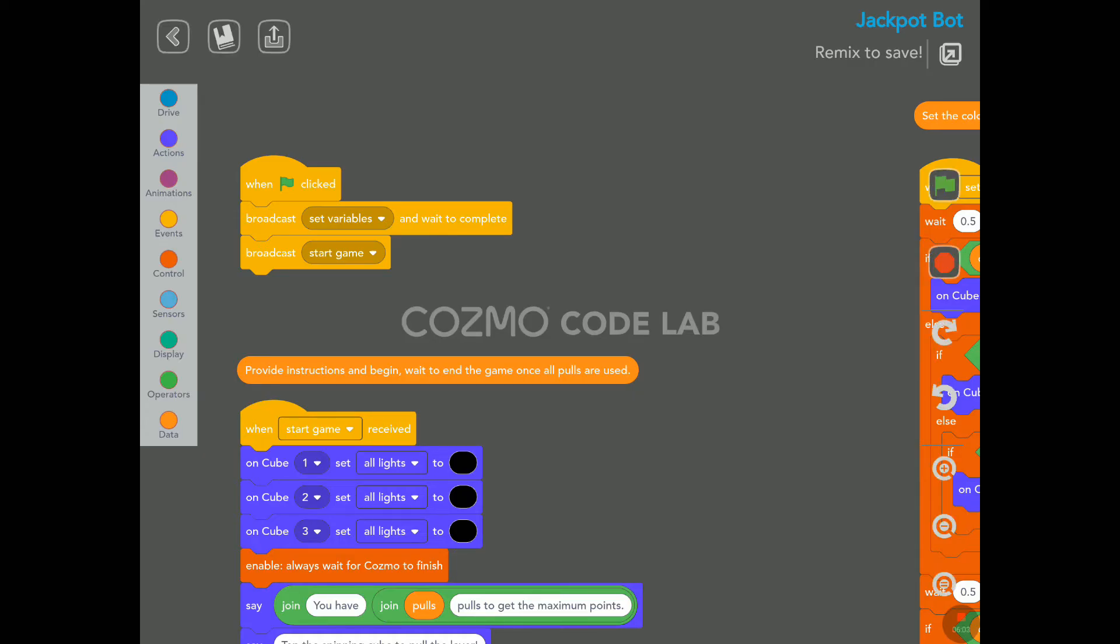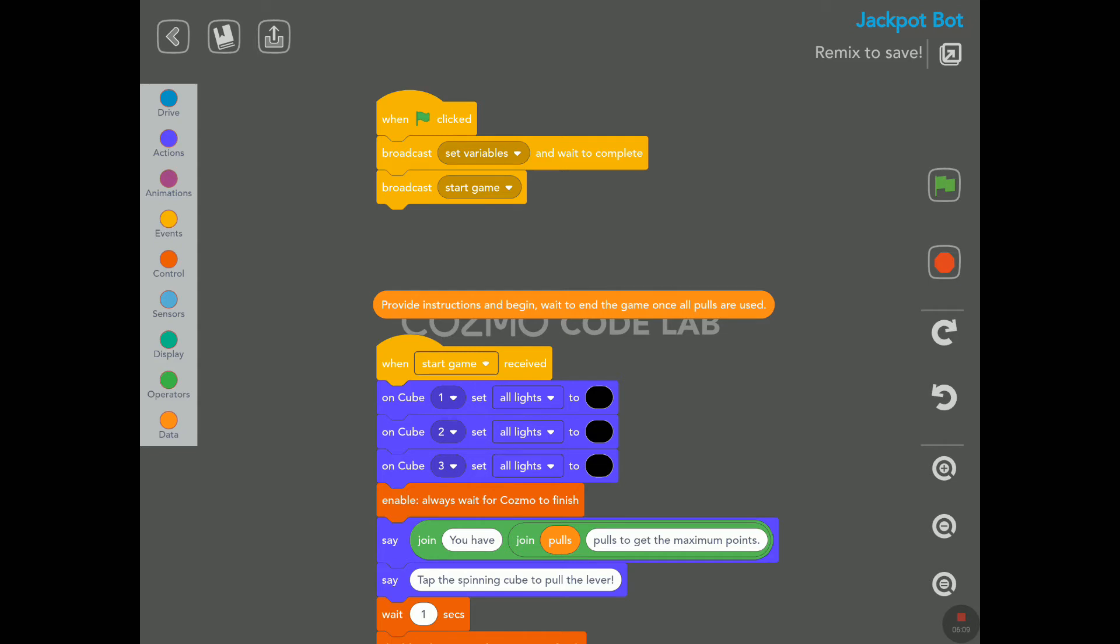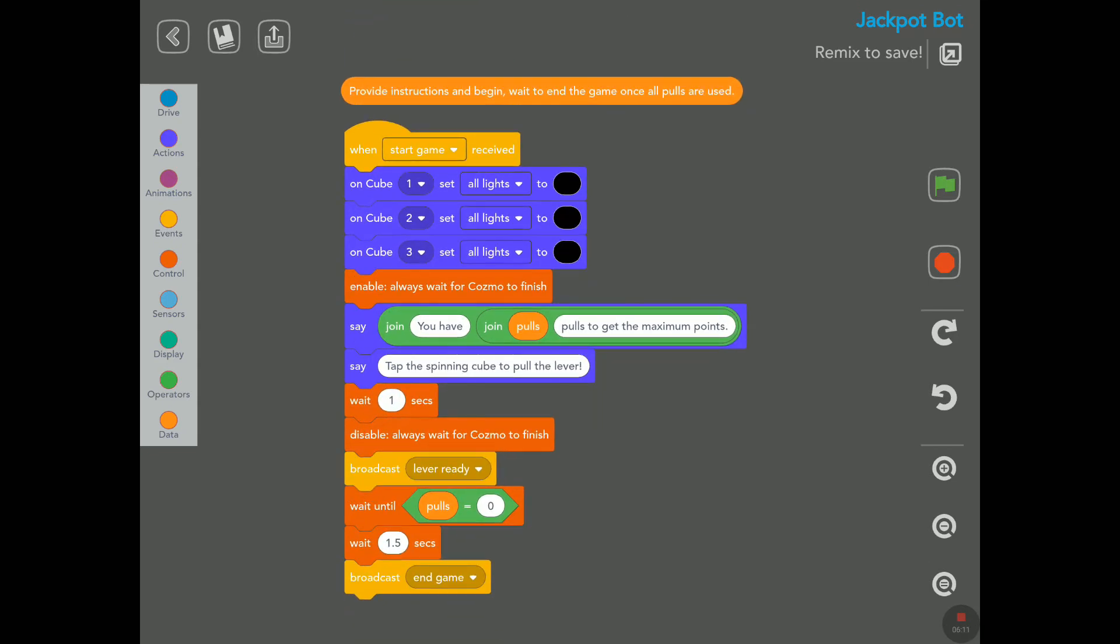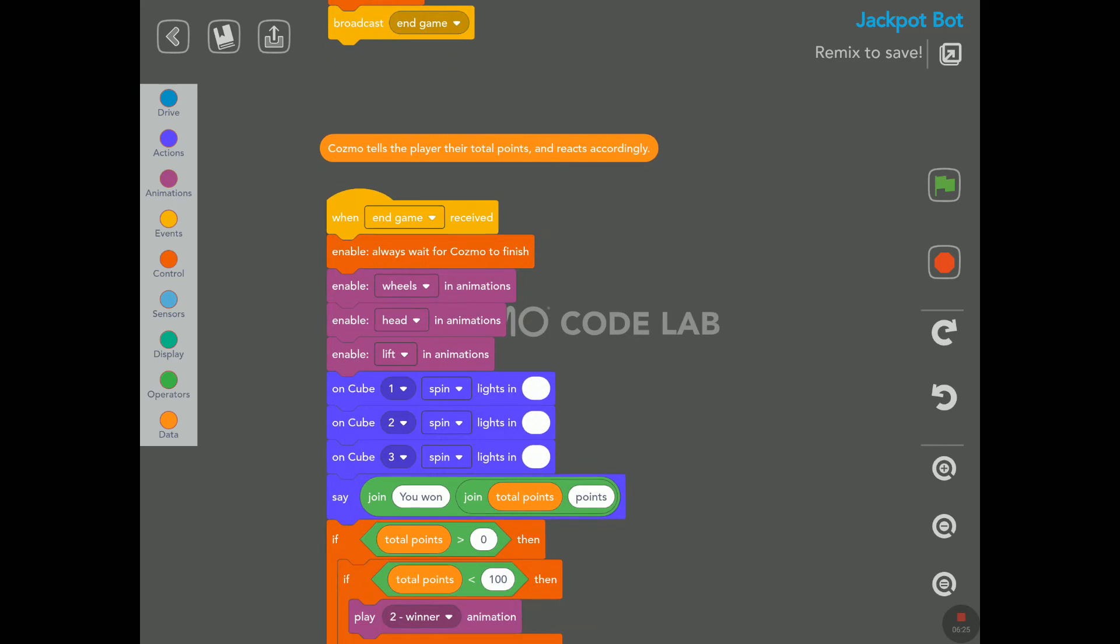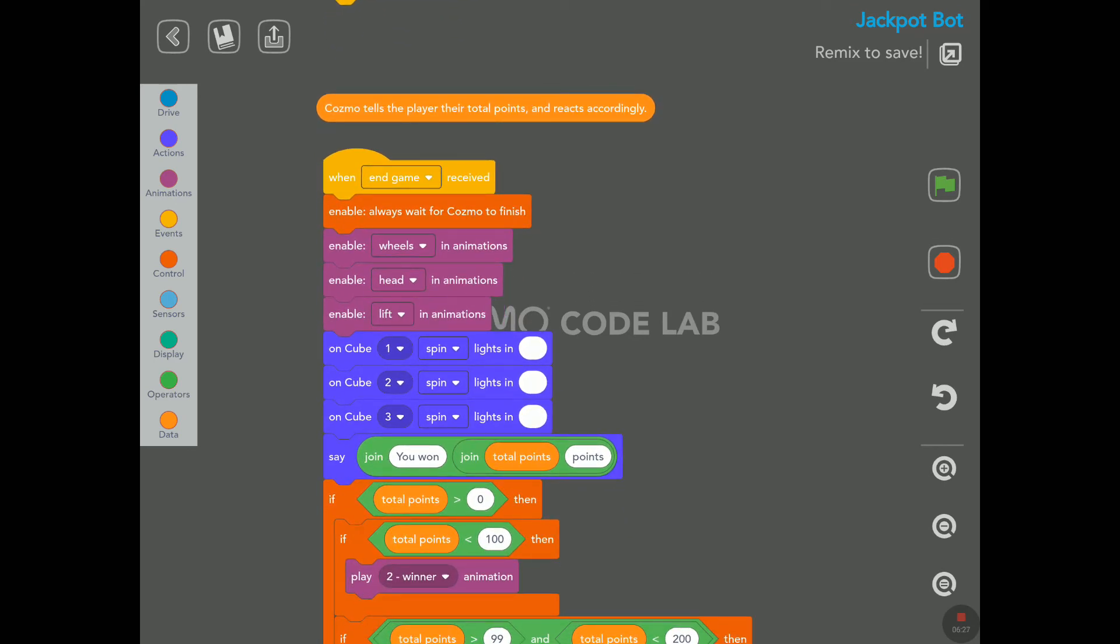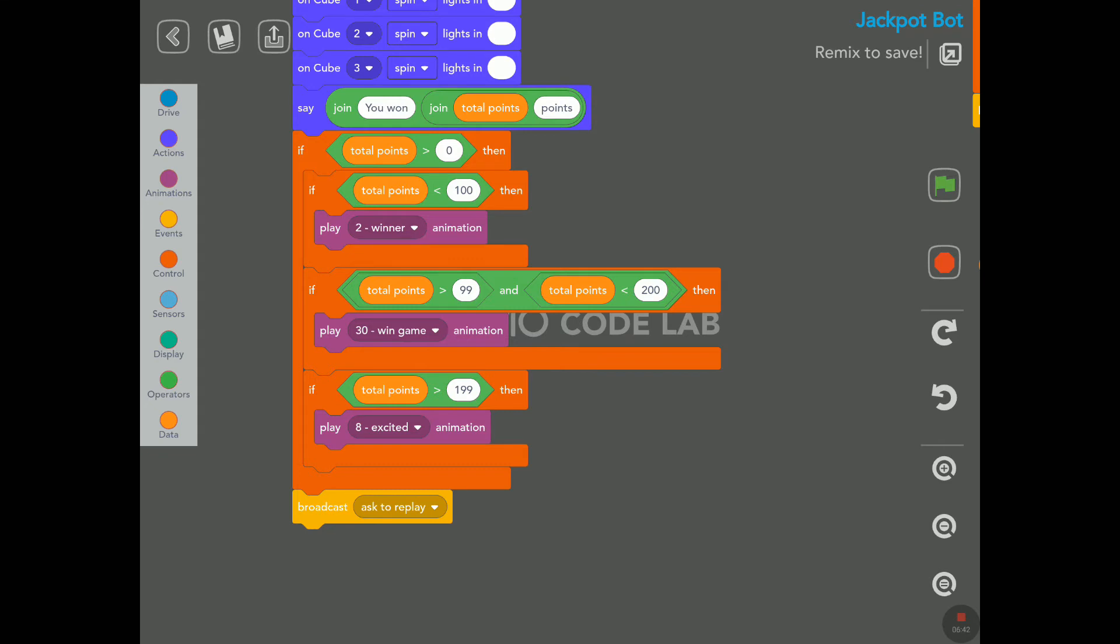So let's have a look here. I'm just waiting here to be back. And let's have a look inside. So when the green flag is clicked, we set a few variables, then we have provide instructions and begin, wait to end the game once all pulls are used, and here Cozmo says you have pulls left, tap the spinning cube to pull the lever. Okay. Cozmo tells the player their total points and react accordingly. This is where I would add the points here to display on his face. So you want points, and that's it here. So that would be very easy here to add the points on his face.